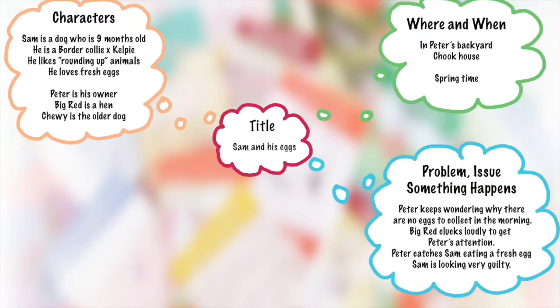Our next mind cloud is when something happens — it could be a catastrophic problem or just a minor development in the story. That is how we develop what the story is going to entail. The problem is that Peter keeps wondering why there are no eggs to collect in the morning. Big Red is clucking very loudly trying to attract Peter's attention, but Peter doesn't speak chicken. And then finally Peter catches Sam eating a fresh egg on the lawn, looking very guilty because he knows he's done something wrong.